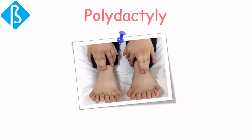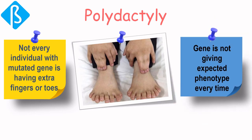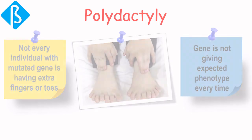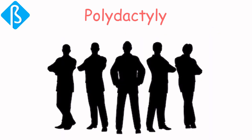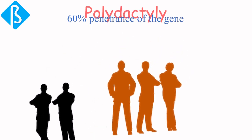Another example of incomplete penetrance is polydactyly — a disorder where a person has an extra finger or toe, or sometimes both — but not every individual with the mutated gene has extra fingers or toes. The gene is not giving the expected phenotype every time. Let's say these five people have the mutated gene that can cause polydactyly, but out of these only three will actually have an extra finger or toe — which makes 60% penetrance of the gene.